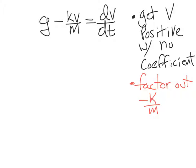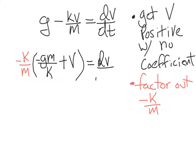So we factor out negative k over m, and we think about what that's going to leave us with. It's going to leave us with a negative g, m on the top, and a k on the bottom. Think about distributing back in. When you multiply these, you should get just a positive g back again. And our next term is going to be plus v. And the right side of the equation remains unchanged, dv dt. Always a good idea to make sure you did this correctly. Double check. When you multiply these, do you get g back again? When you multiply these, do you get negative kv over m? Yes, it all checks out.